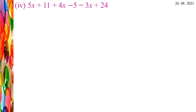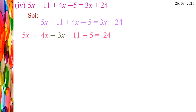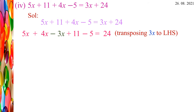Let's see the fourth problem: 5X + 11 + 4X - 5 = 3X + 24. Let us find the solution. Here there are 3 variable terms and 3 constant terms. X is the variable, so we have to find the X value. We need to separate constant terms and variable terms: 5X + 11 + 4X - 5 = 3X + 24.